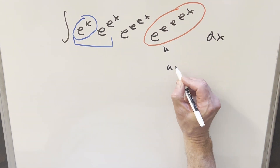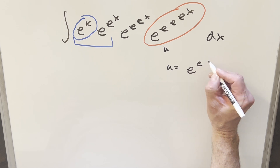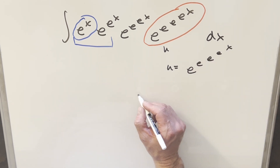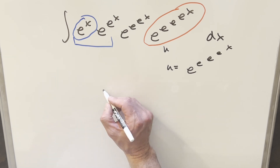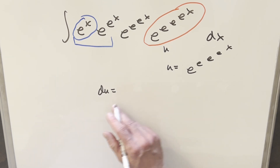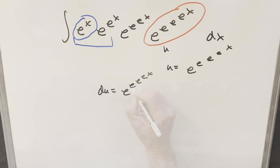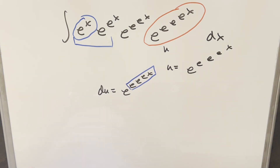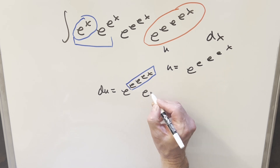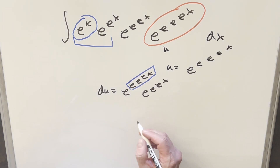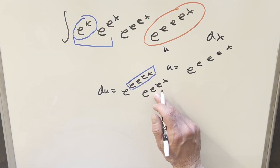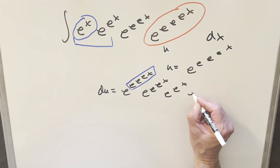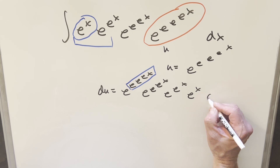We'll make this our u. So u equals e to the e to the e to the e to the x. Then I'll take the derivative. When we take the derivative of this, first we just get the whole expression back. Then we need the chain rule, which means we need the derivative of all this — that's going to be e to the e to the e to the x. Then we apply the chain rule again and get e to the e to the x, and then the derivative of that is just e to the x dx.